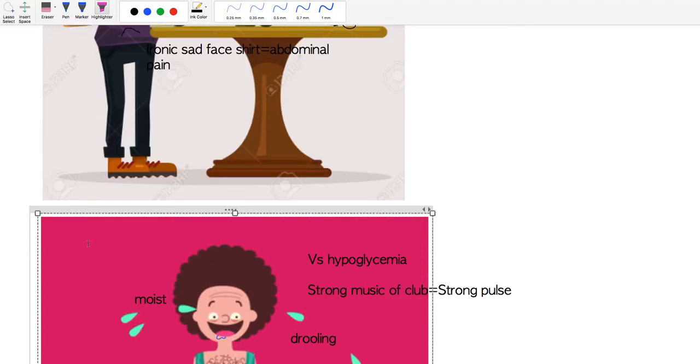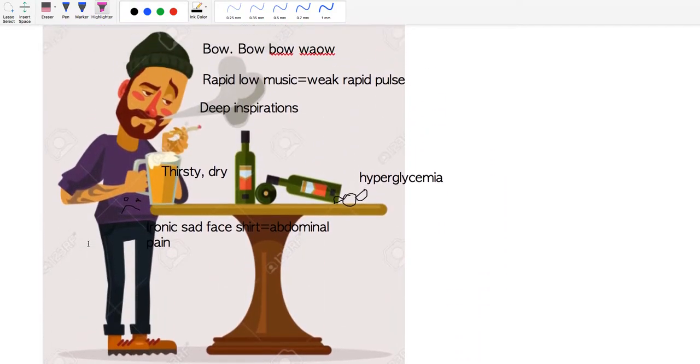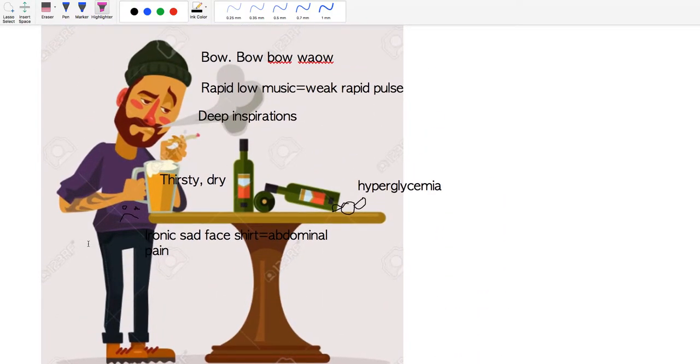To conceptualize hyper and hypoglycemia, hyperglycemia will be represented by this piece of candy on the table, maybe a free little candy for being at the bar.